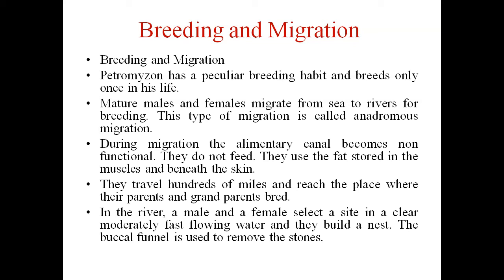During migration, the alimentary canal becomes non-functional and they do not feed. They use the fat stored in the muscles and beneath the skin. They travel hundreds of miles and reach the place where their parents and grandparents bred. In the river, a male and female select a site in clear, moderately fast-flowing water and build a nest. The buccal funnel is used to remove stones during nest building.